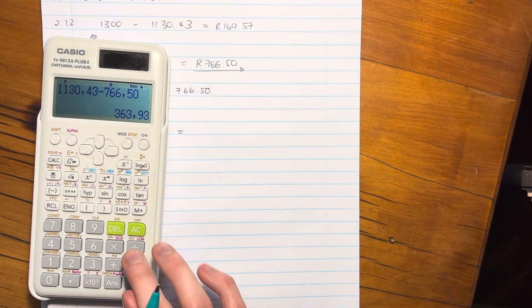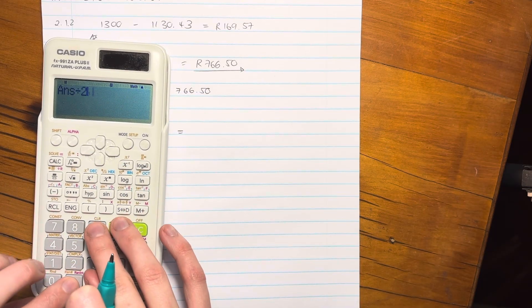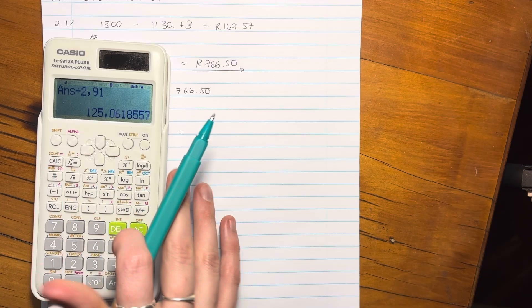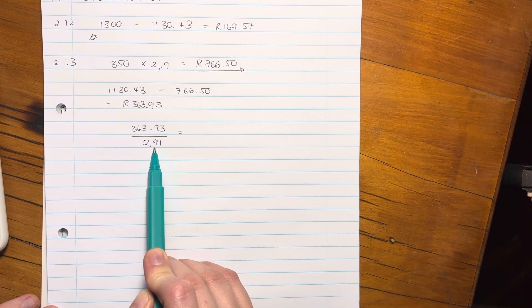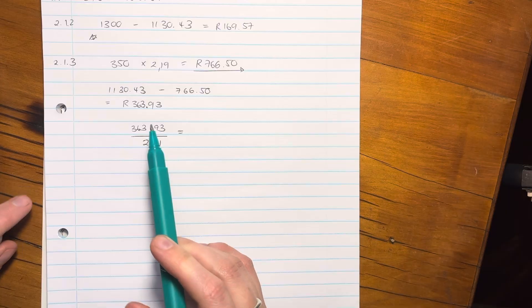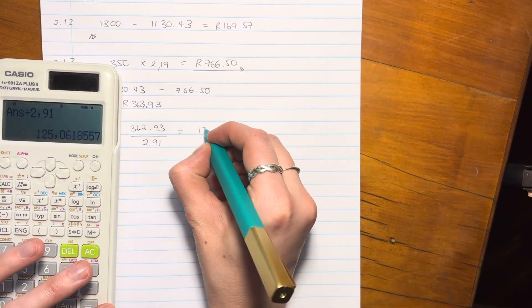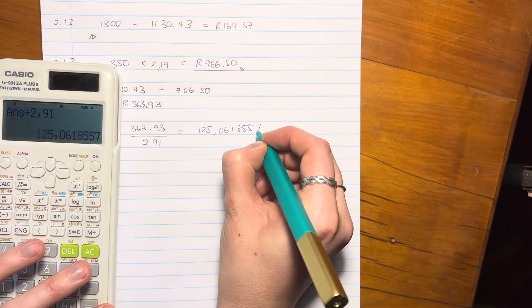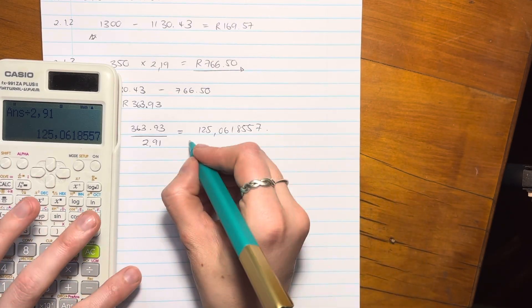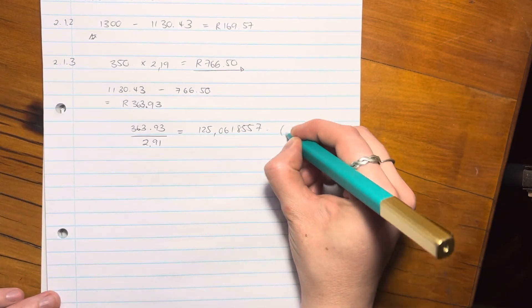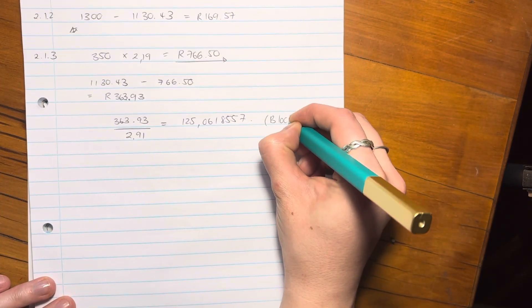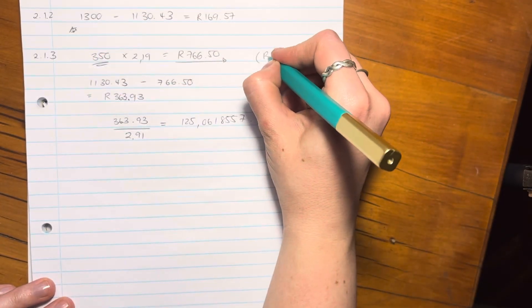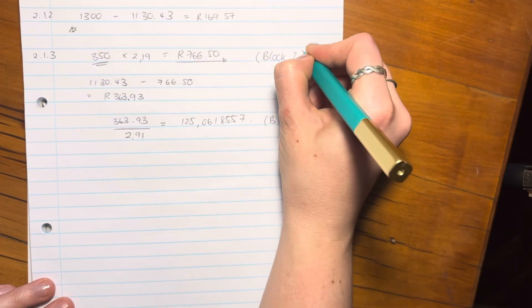So we're going to say this 363.93. And we're going to divide it by 2.91, right? And that will give us our number of kilowatts. So just take your answer here, divide it by 2.91. Because that will take my amount, right? Because that's my amount. I'm dividing it by the cost per kilowatt. And that will then give me my number of kilowatts. So my number of kilowatts is 125.0618557. Okay. So that's how much she used in block 2.